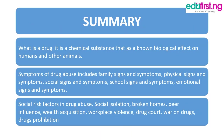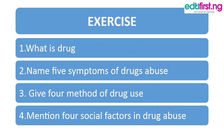We have come to the end of today's class. In summary: a drug is a chemical substance that has a non-biological effect on humans and animals. We talked about the symptoms of drug abuse, which include family, physical, social, school, and emotional signs and symptoms. We also covered social risk factors, including social isolation, broken homes, peer influence, workplace violence, drug courts, war on drugs, and drug prohibition.